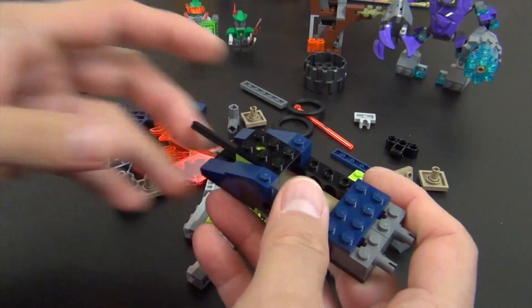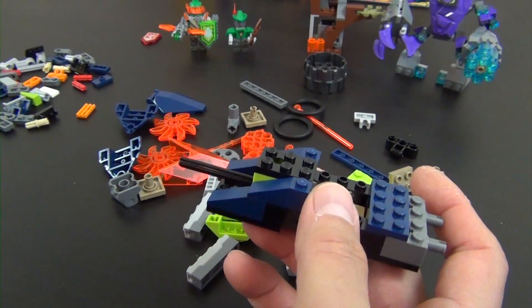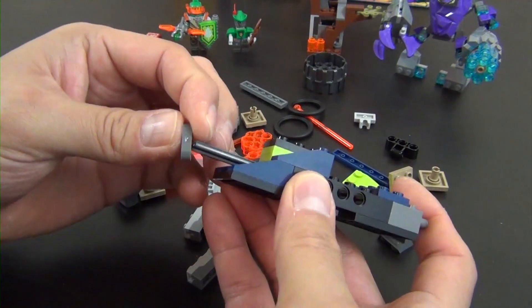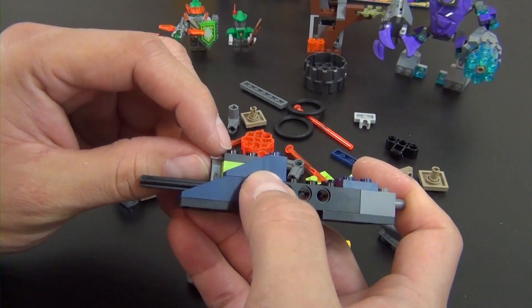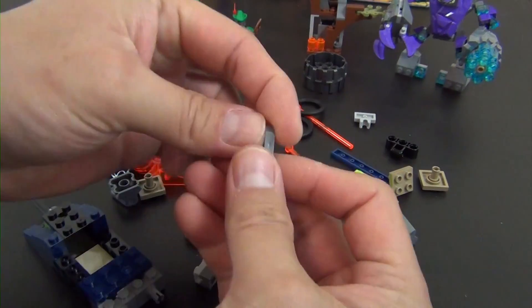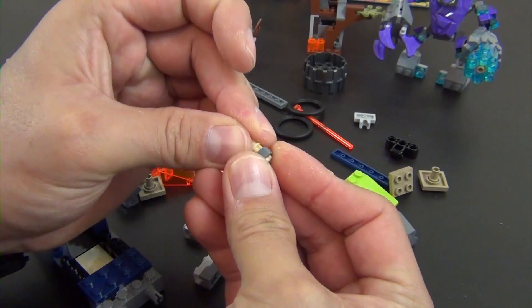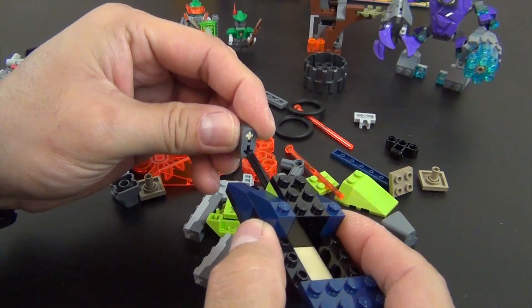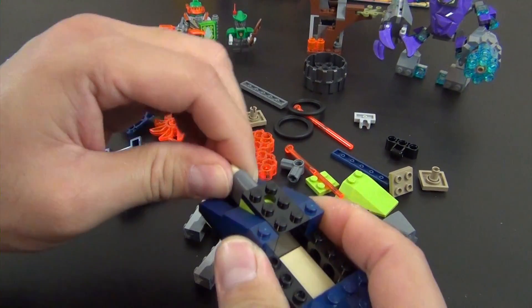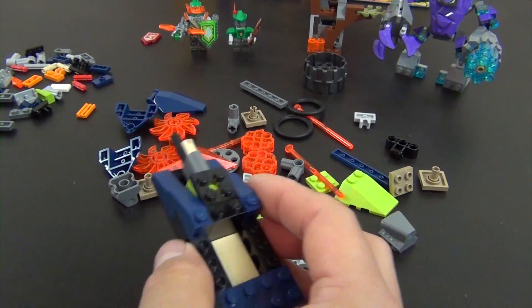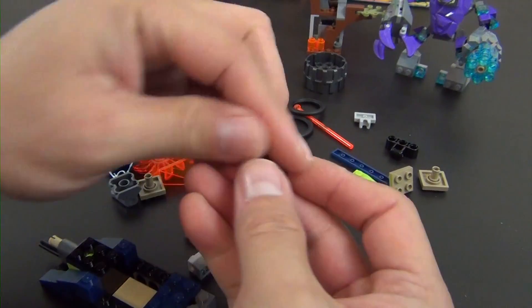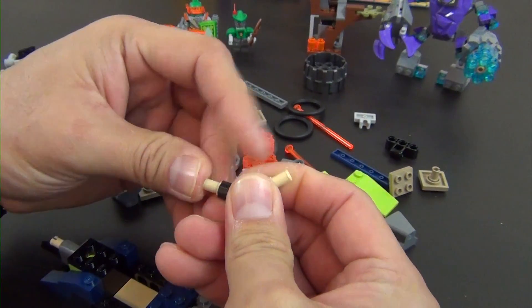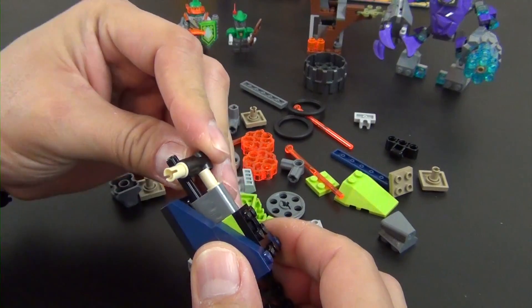Okay, we have this axle. So it only goes in so far because it hits that black piece back there, so push it in like that. Two more of these thin left arms. Put two of them back to back. Slide this all the way on. There, add that, which will go here.